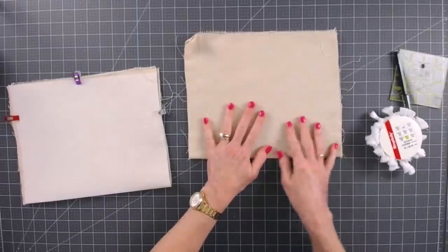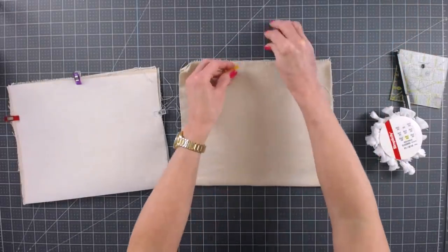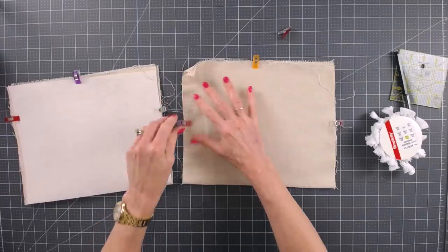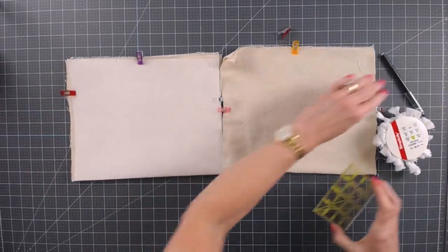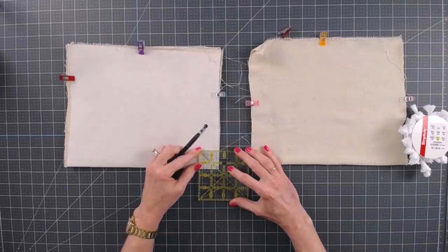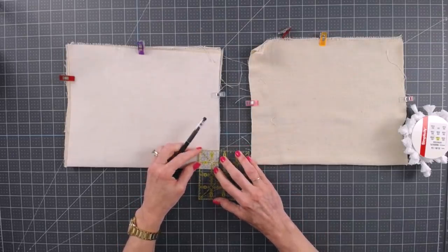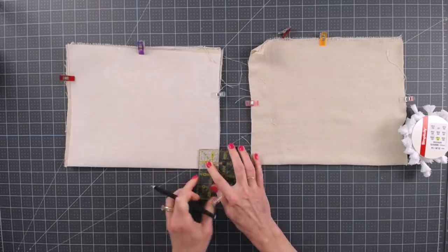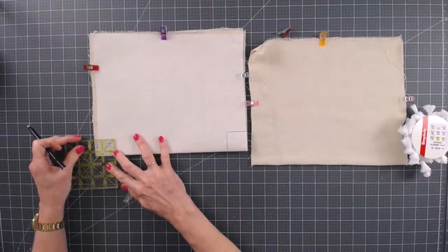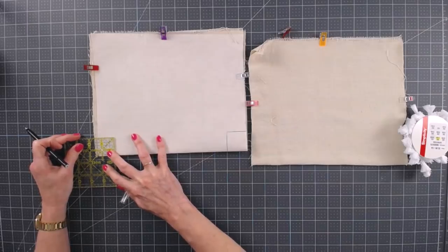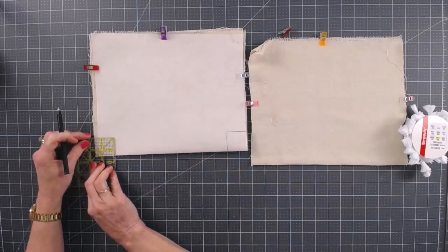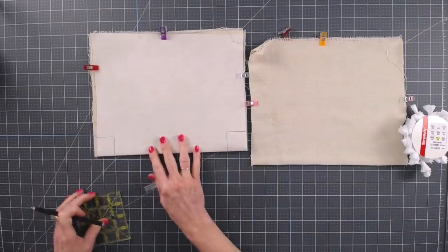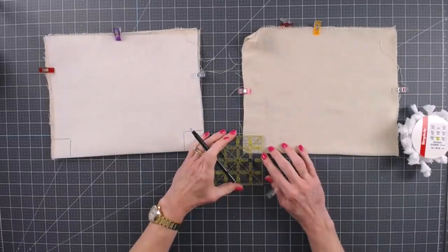This drop cloth doesn't really have a right and a wrong side, so just have to pretend that you can tell the difference here. And we're just going to clip that one together. Perfect. All right, now you're going to use your ruler and you're going to measure an inch and a half square from the edge and mark that with your pen. Repeat on this side, inch and a half square.